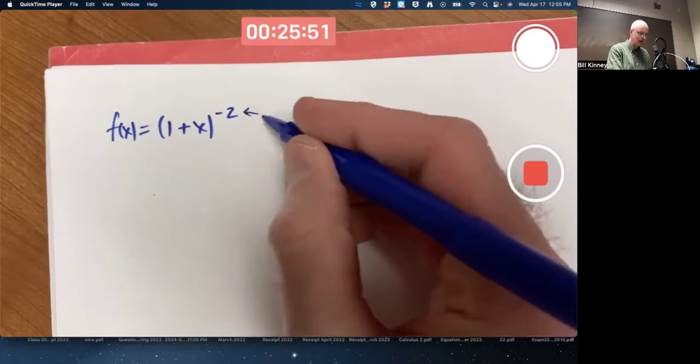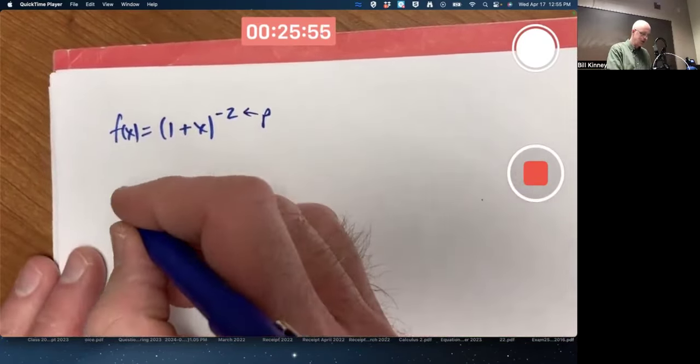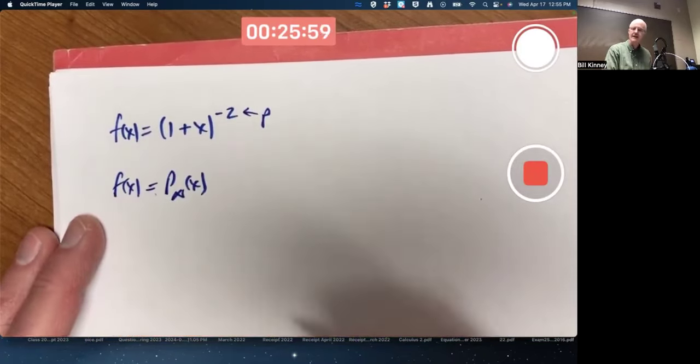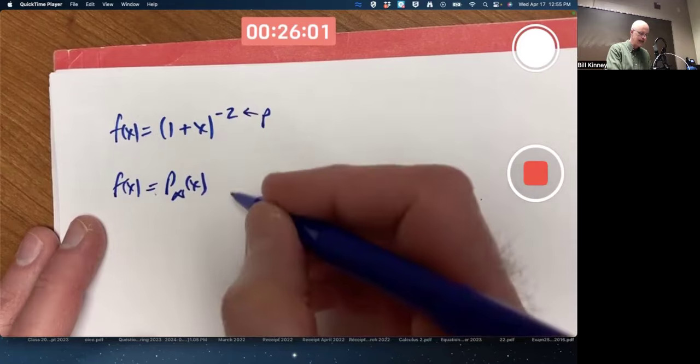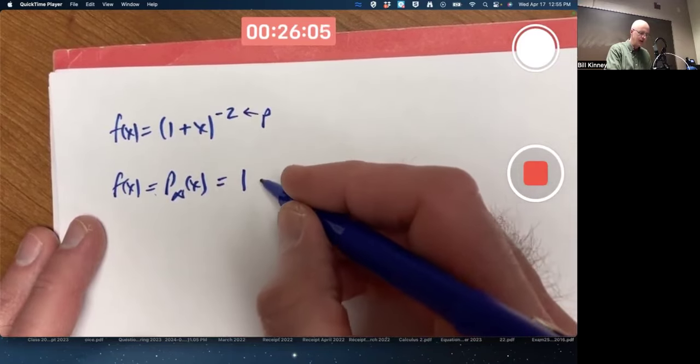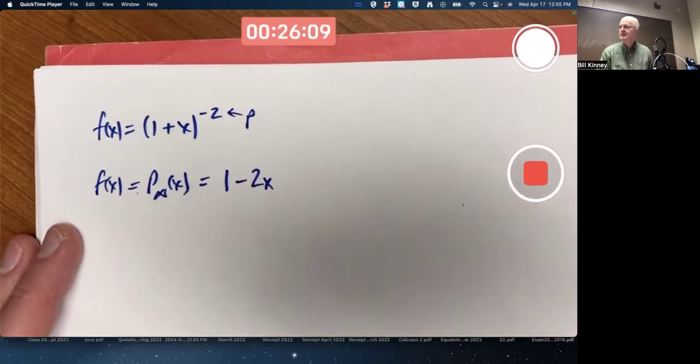p equals negative 2 here. So, I mean, we do get equality of f of x with its Taylor series. It turns out for x between negative 1 and 1. And it turns out with p equal to negative 2, we get 1 plus px would be minus 2x. Because p is negative 2.